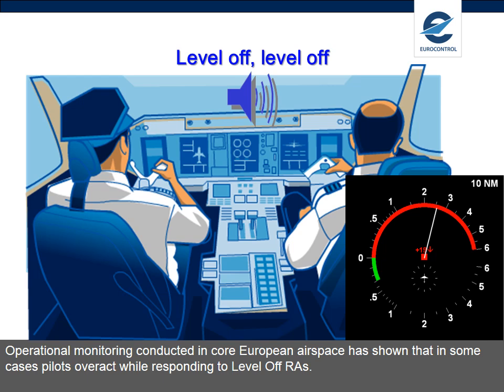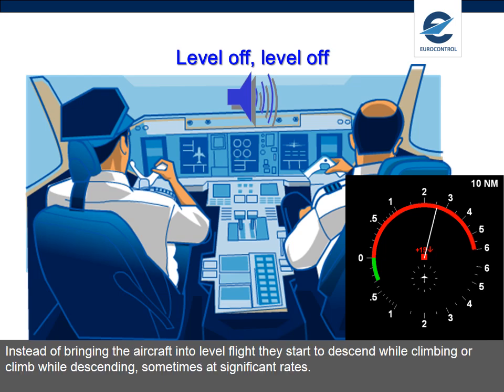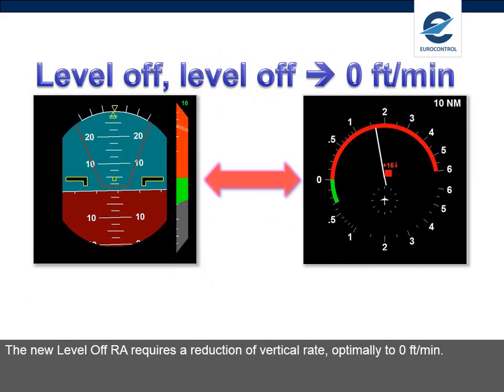Operational monitoring conducted in core European airspace has shown that in some cases, pilots overreact while responding to Level Off RAs. Instead of bringing the aircraft into level flight, they start to descend while climbing, or climb while descending, sometimes at significant rates. The new Level Off RA requires a reduction of vertical rate, optimally to 0 feet per minute.